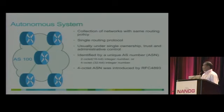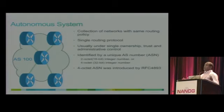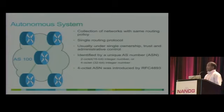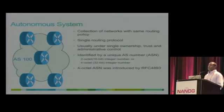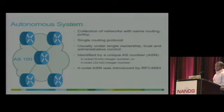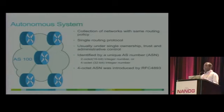Typically, an autonomous system uses a single routing protocol inside the network. However, in some cases, particularly for large service providers, multiple routing protocols may be used and then bound together via VGT. The core part of the network always runs a single routing protocol, but the edge may use different protocols aggregated via VGT for internal use. While an autonomous system is usually under a single entity, a single entity may have multiple ASNs due to mergers and acquisitions.